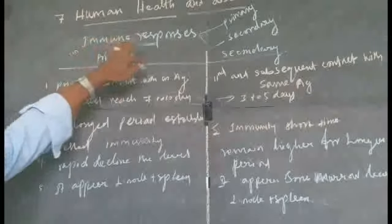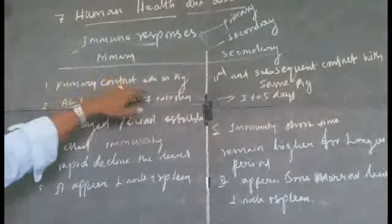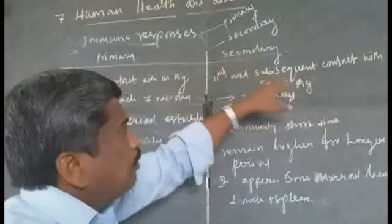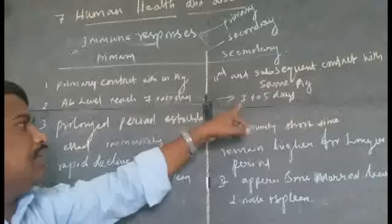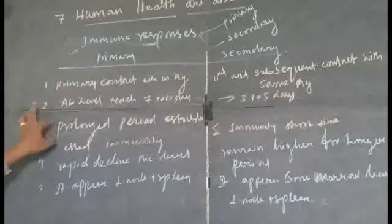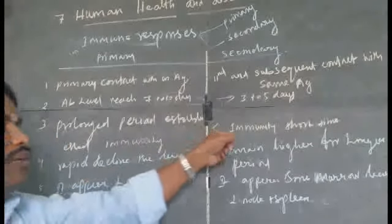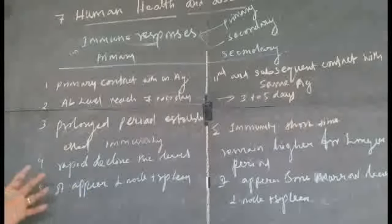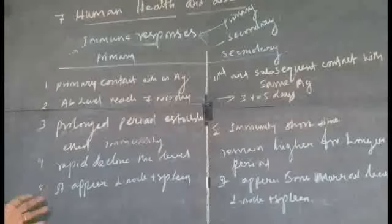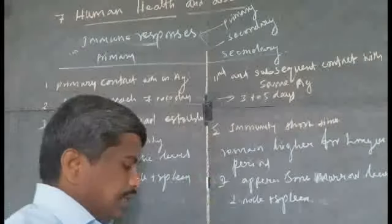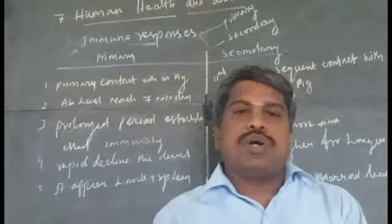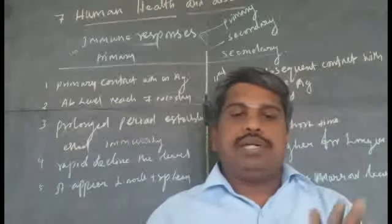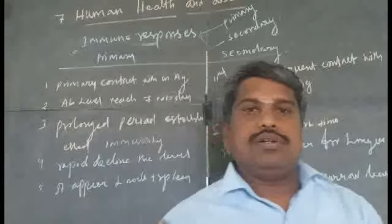To summarize the differences: primary immune response results from first contact with the antigen; secondary immune response results from second and subsequent contact with the same antigen. Antibody level reaches 7 to 10 days versus 3 to 5 days. Prolonged period to establish immunity versus short time. Rapid decline in antibody level versus remaining higher for longer. Appears in bone marrow, spleen, and lymph nodes. Today's homework: what is primary immune response, secondary immune response, and what are the differences between them? Thank you.